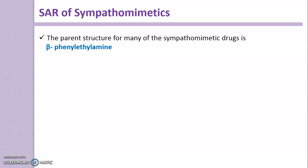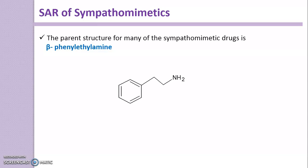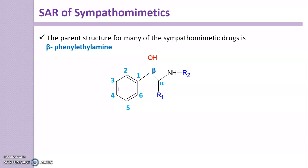The parent structure for many of the Sympathomimetic drugs is Beta-Phenylethylamine. It has a phenyl ring and an ethyl side chain with an amino group. We consider the Alpha-Carbon adjacent to the amino group, and next to that is the Beta-Carbon. To this Beta-Carbon the phenyl ring is attached — that's why the name Beta-Phenylethylamine. We consider this general structure for the discussion of Structural Activity Relationship.